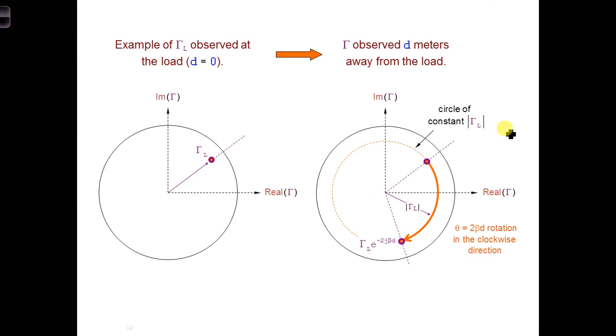The magnitude of the reflection coefficient is constant, no matter what D is, because the distance from the center of the Smith chart to our impedance dot has not changed. We're rotating around the center of the Smith chart at a constant radius. So we can call this the circle of constant reflection coefficient magnitude.